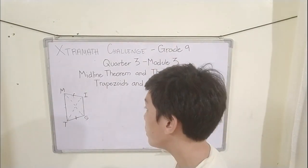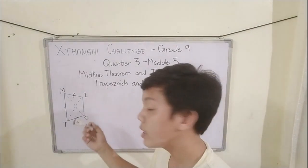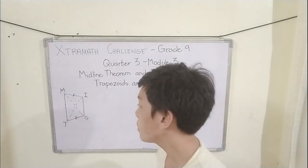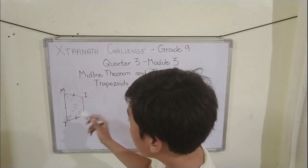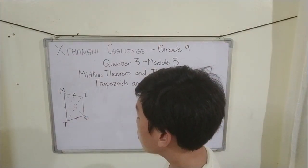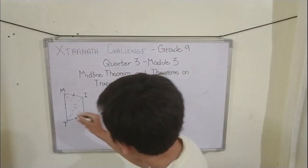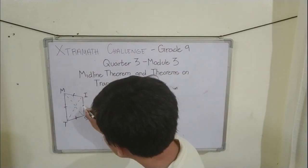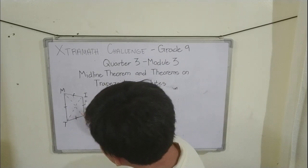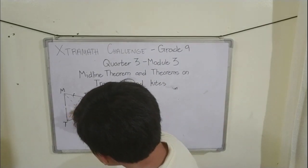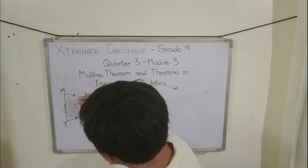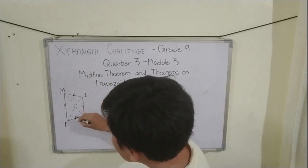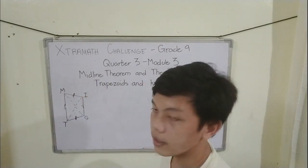An isosceles trapezoid is a quadrilateral with one pair of opposite sides parallel and the legs are congruent. This side is parallel to this side, and this leg is congruent to this leg.